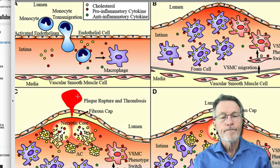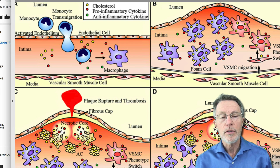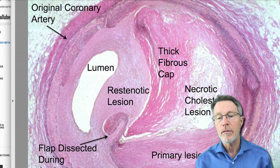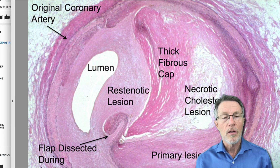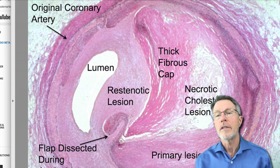Here we have a necrotic core that has broken through and the liquid has spilled out into the bloodstream — what's called plaque rupture and thrombosis. That means it broke through and thrombosis means formation of a clot. That's the real risk here, not so much that the artery will close off. A small lumen causes decreased blood flow, which is chronic and causes angina. But if the plaque releases, it will cause a clot and that will cause the heart attack.